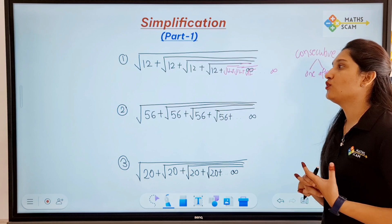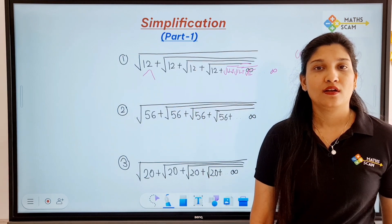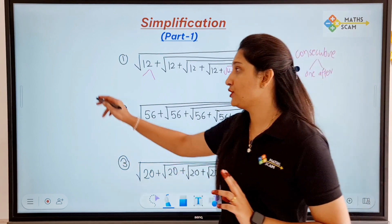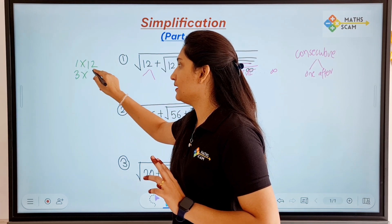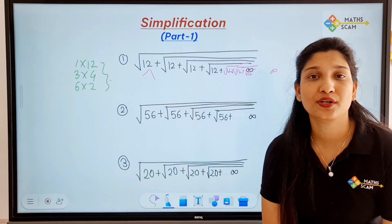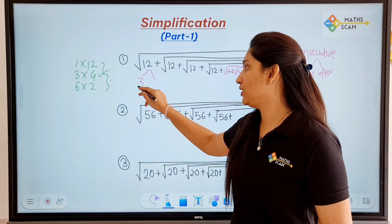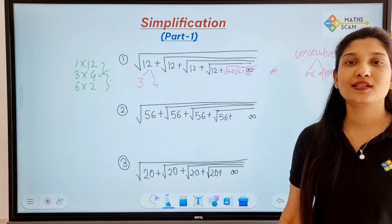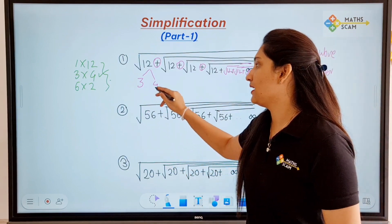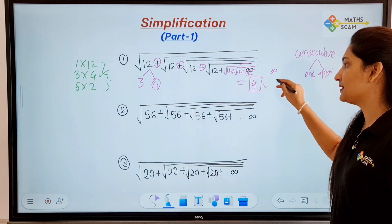You just have to find out the consecutive factors of 12. The factors of 12 are: 1×12, 2×6, 3×4, and 6×2. Out of all these, the consecutive factors — where the difference between both factors is one — are 3 and 4. Because all signs are positive here, we choose the greatest factor. So the answer to this question is 4.